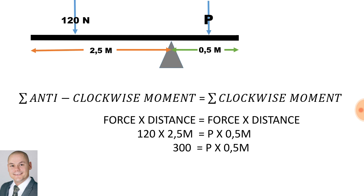Therefore, if we use a little bit of mathematics, the unknown force P is equal to 600 newtons.